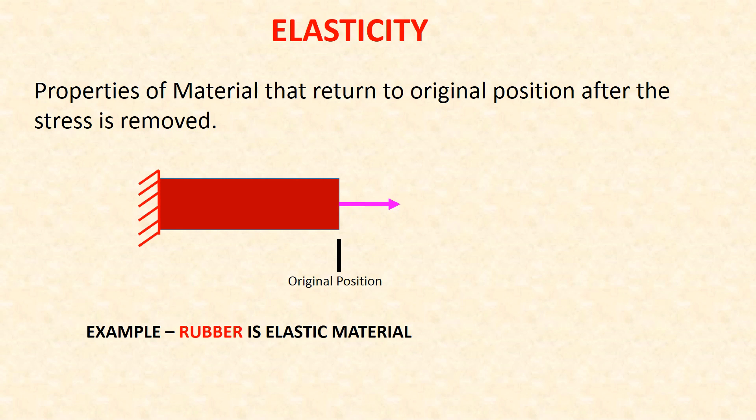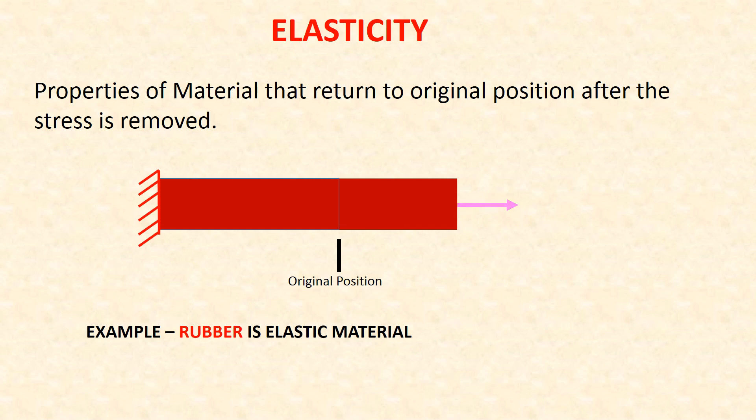Elasticity is the property of a material that returns to its original position after the stress is removed. When stress is applied, the material is elongated; after stress is removed, it returns back to original position. Rubber is an example of an elastic material.